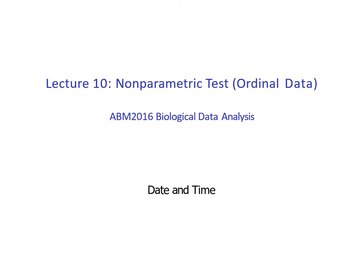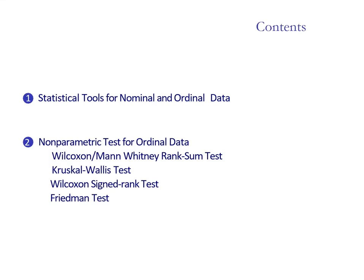Non-parametric tests are essentially used for data that is not normally distributed. If you remember from your t-test and ANOVA, the data have to be normally distributed. Those tests used for normally distributed data are called parametric tests. Non-parametric tests are used for skewed data — basically data that doesn't look normally distributed — and we have a lot of them.